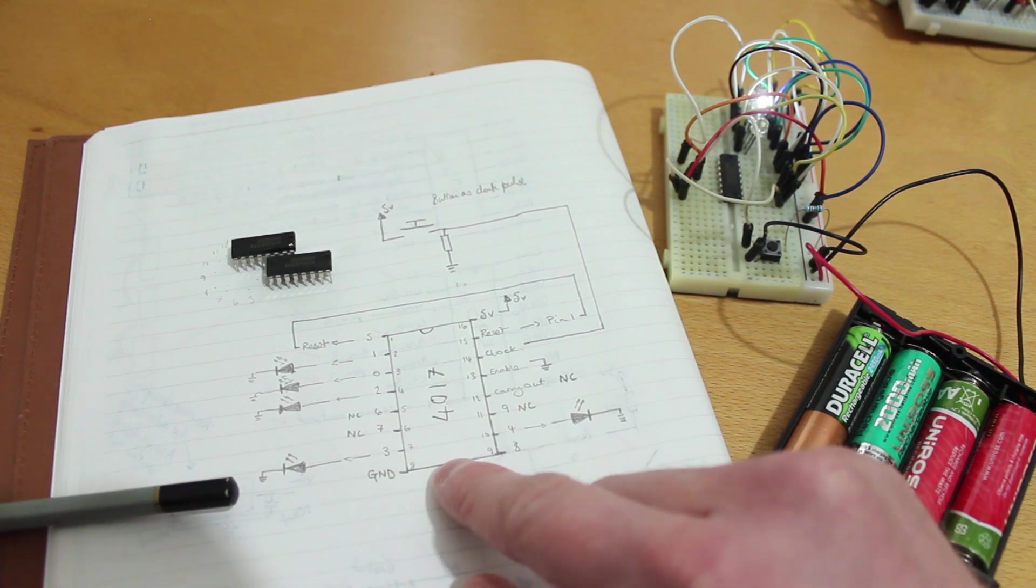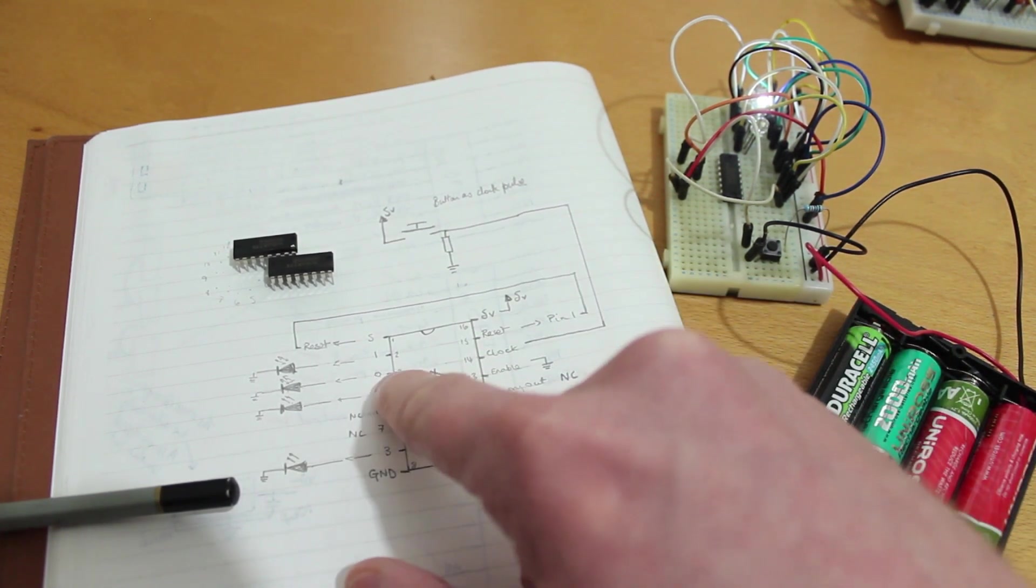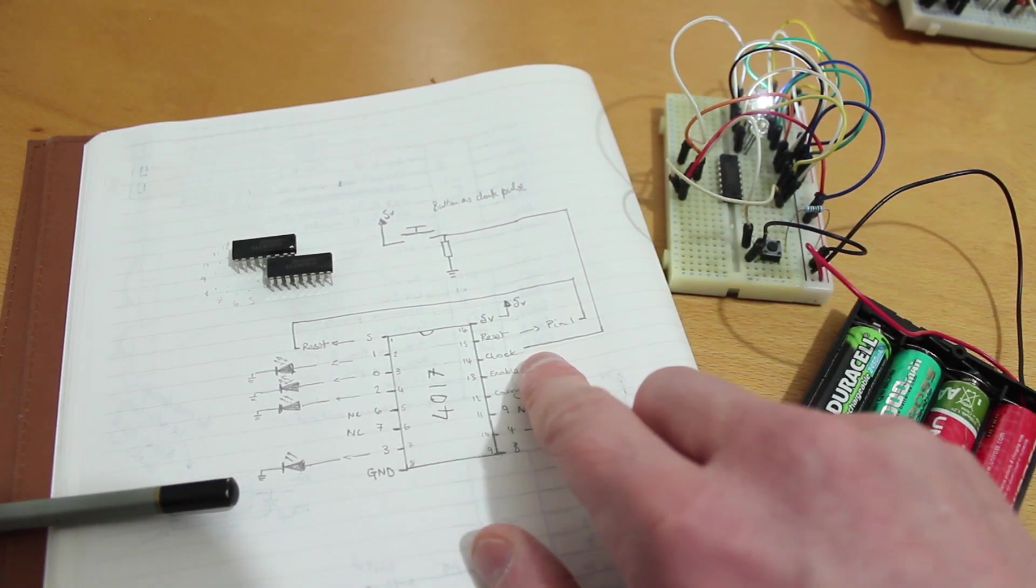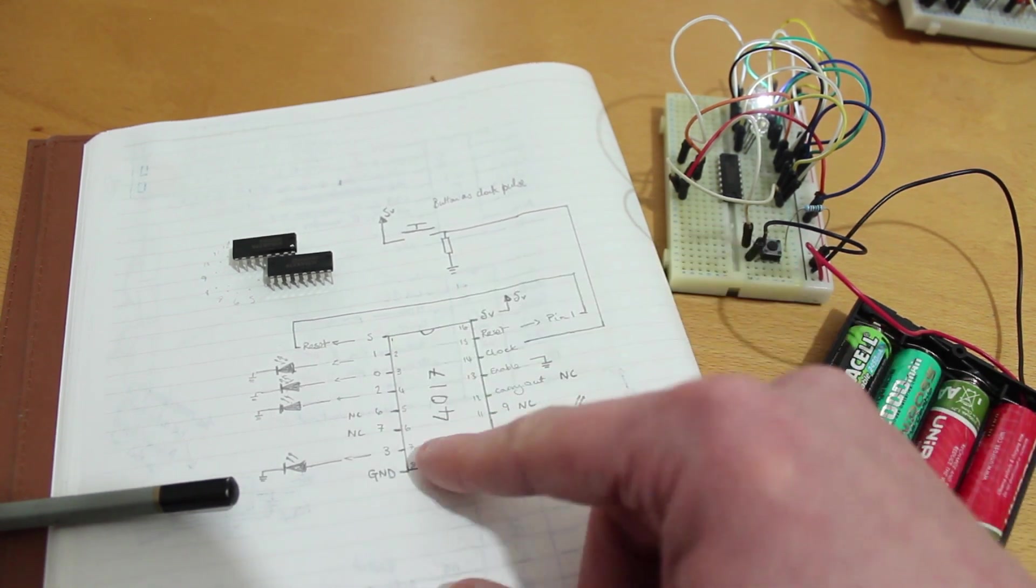A decade counter essentially counts up from zero. So zero is pin three there. That will be your first output and it will be high. And every time you pulse the clock input there, it will count up again.